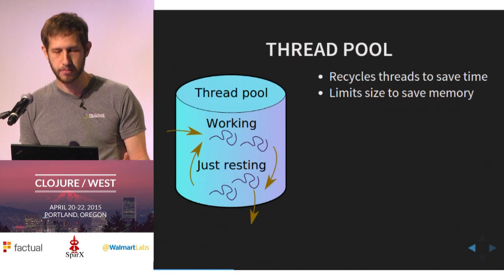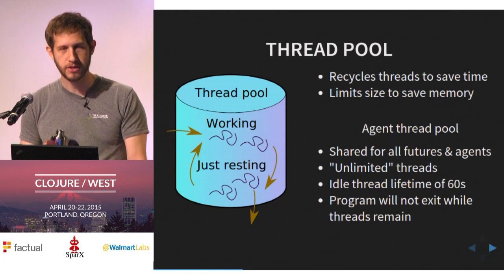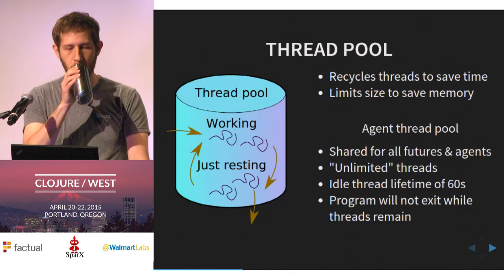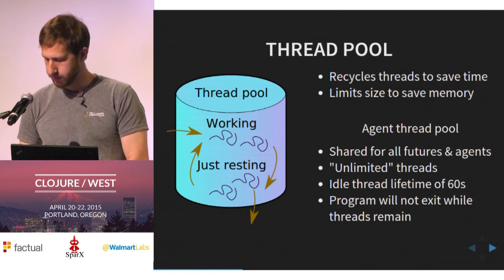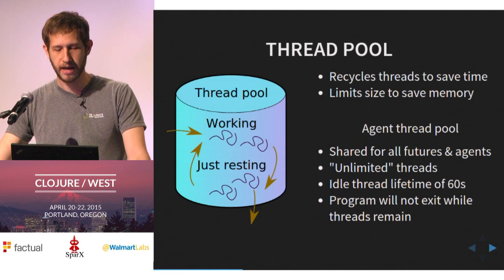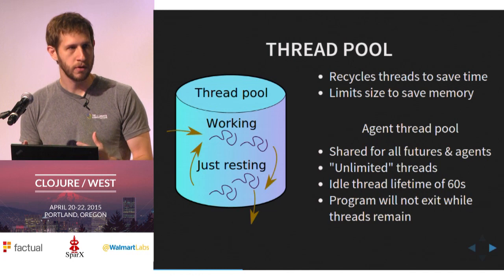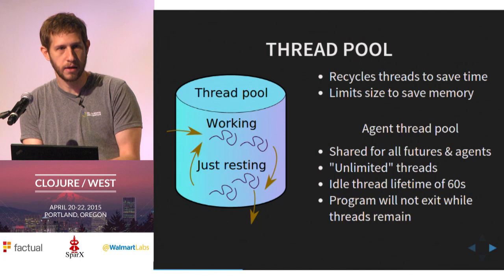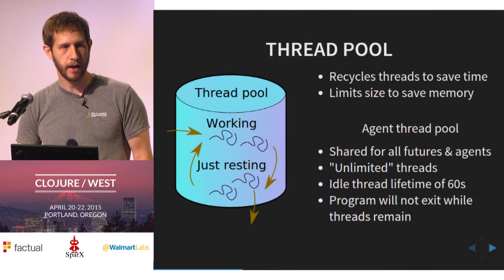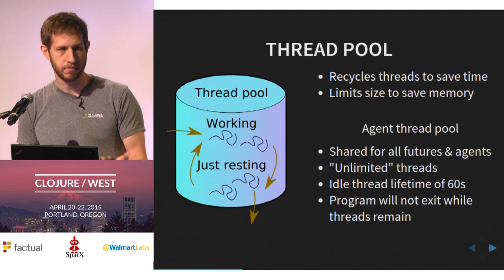Clojure uses a single thread pool — the agent thread pool — shared for all futures and agents. It has nominally unlimited threads; practically it supports max-int threads, but you'll run out of memory long before you run out of integers. It also has an idle thread lifetime of 60 seconds — threads sitting around more than 60 seconds will evaporate. One interesting side effect: these aren't daemon threads. So if your main function exits, these threads are still running in the background and the JVM won't exit. If you've had a small main with a future and noticed your program doesn't exit — this is why. The easy answer is just call system-exit.